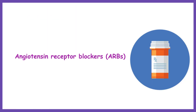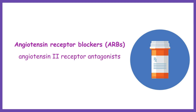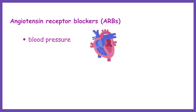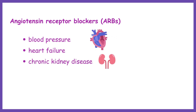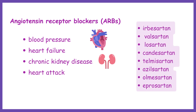Angiotensin receptor blockers, or ARBs, also known as angiotensin-2 receptor antagonists, are used to treat high blood pressure and heart failure. They are also used for chronic kidney disease and prescribed following a heart attack. They include irbesartan, valsartan, losartan, candesartan, telmisartan, azilsartan, olmesartan, eprosartan, etc.